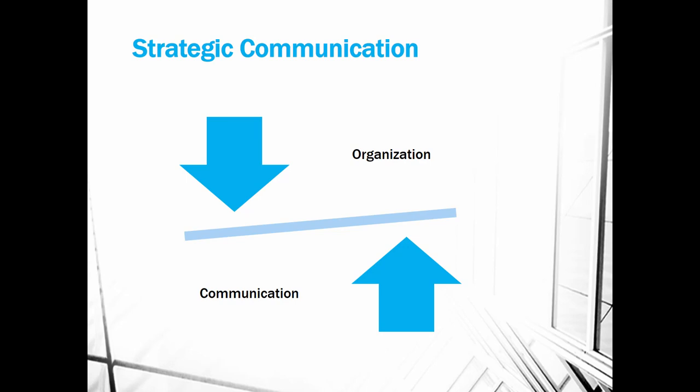We can think of organizations in this top-down sense, as consisting of structures and systems and processes that are, in essence, the container — the place where people work. Organizations have policies that dictate people's behavior. They have structures that determine job descriptions and roles that tell people the kinds of things you ought to do on a day-to-day basis.